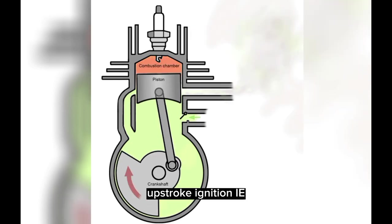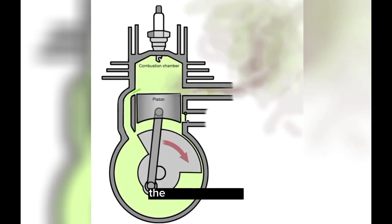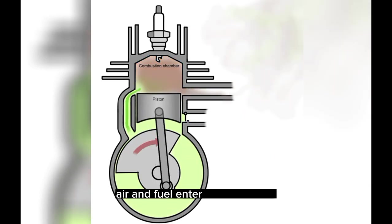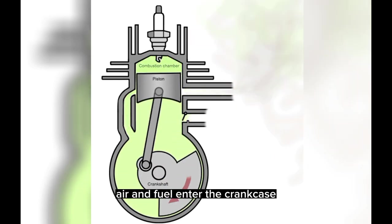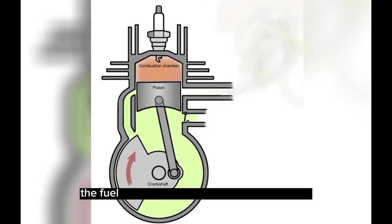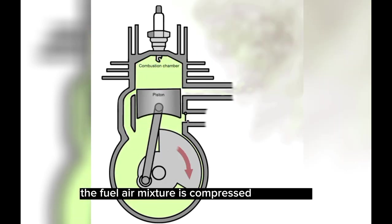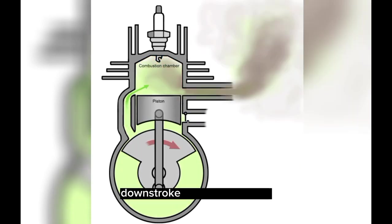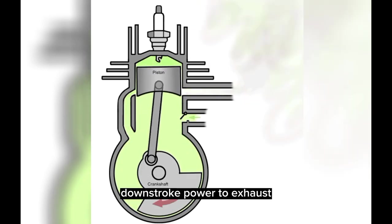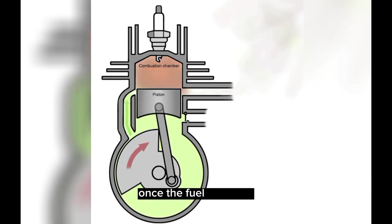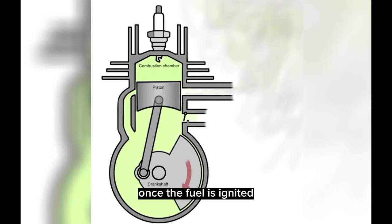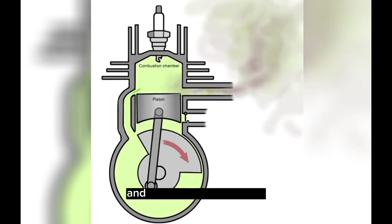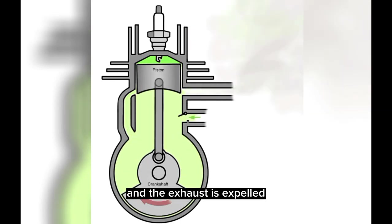The two-stroke process includes: Upstroke — ignition and compression: the piston goes up, air and fuel enter the crankcase, and the fuel-air mixture is compressed and ignited. Downstroke — power and exhaust: once the fuel is ignited, the piston is pushed down and the exhaust is expelled.